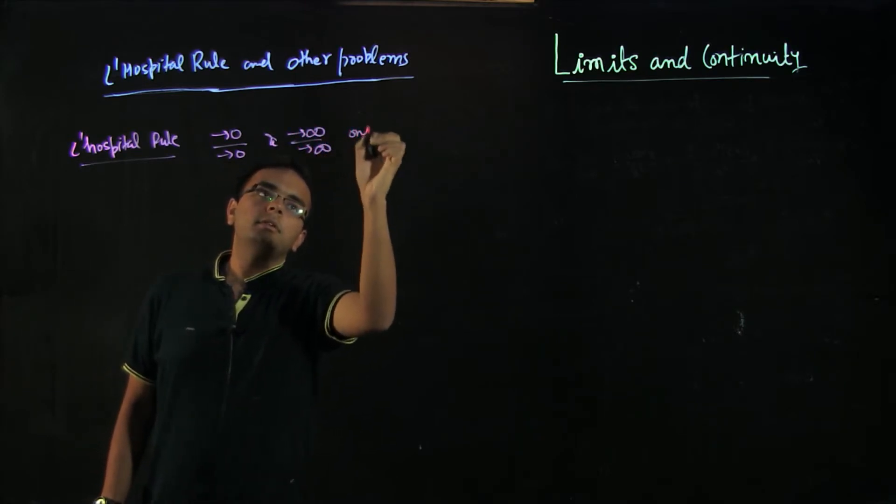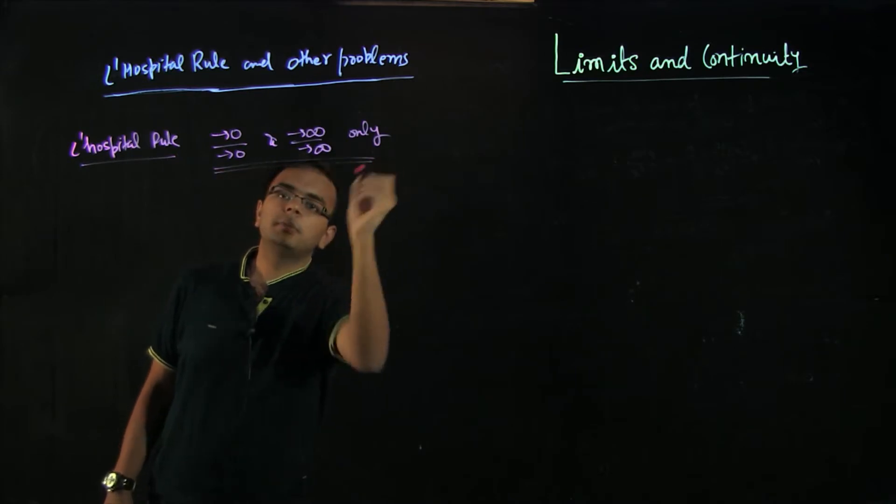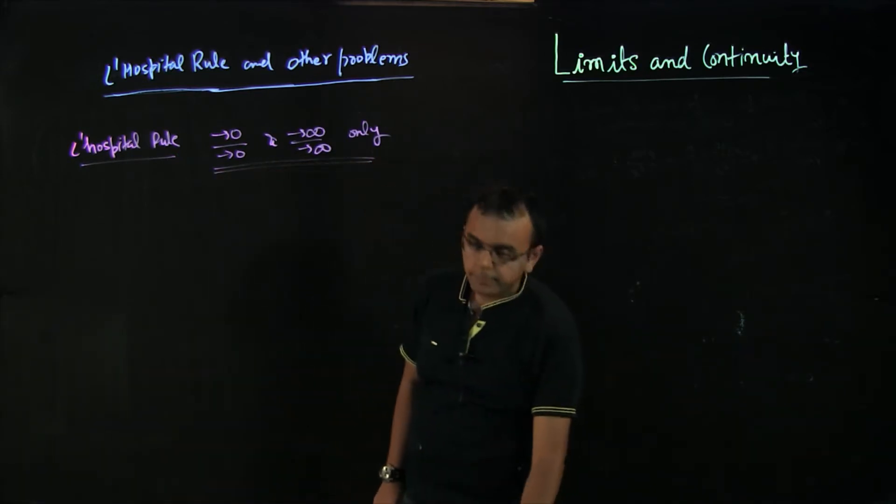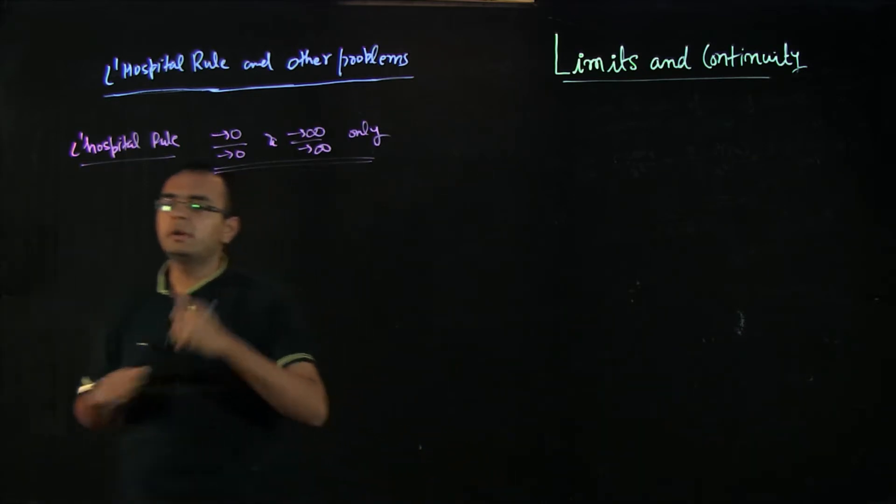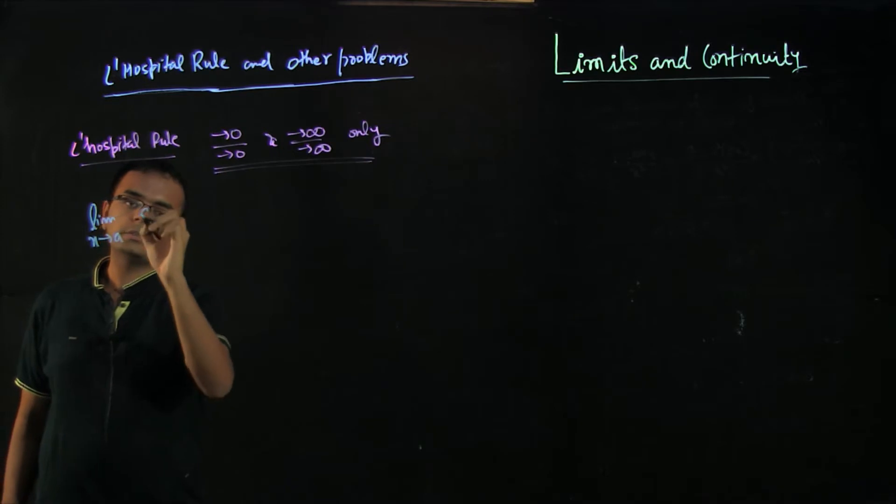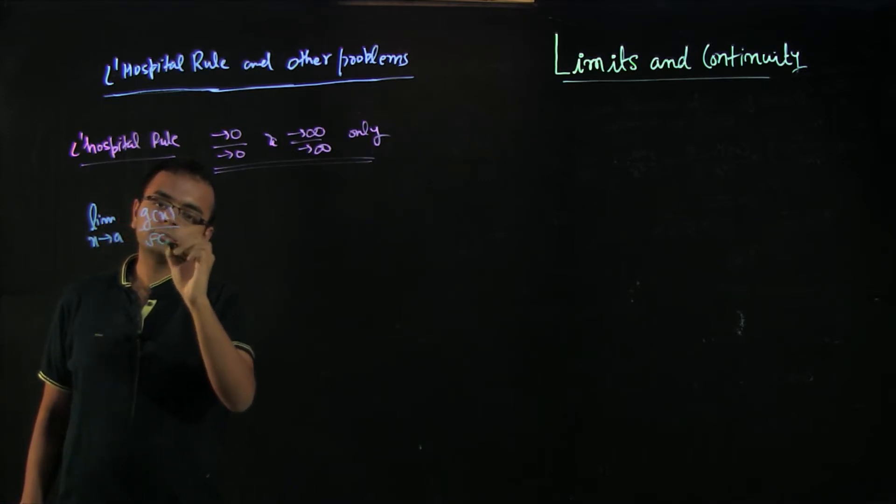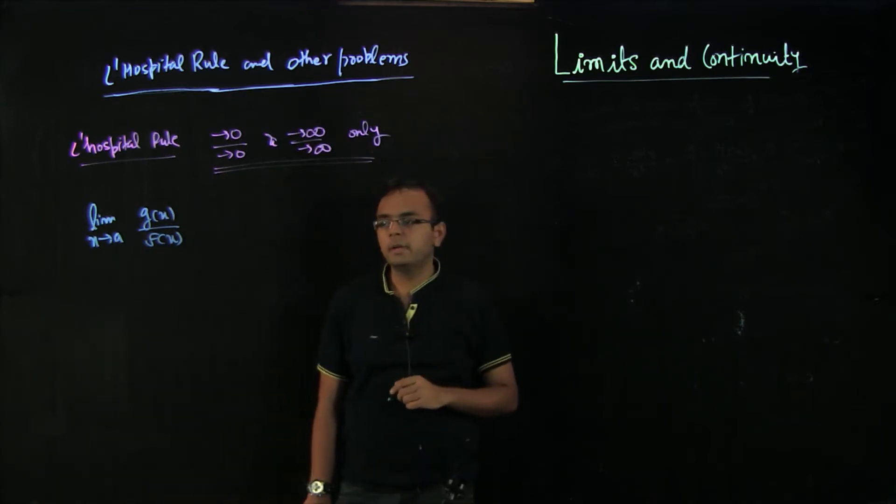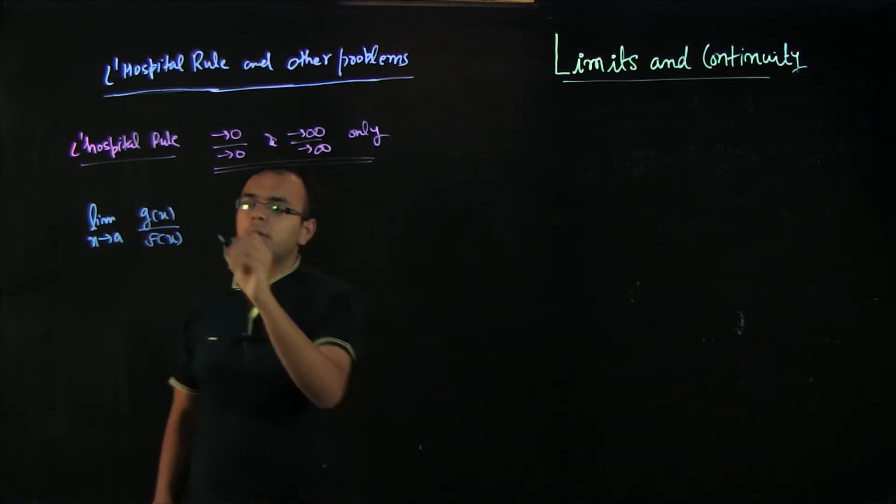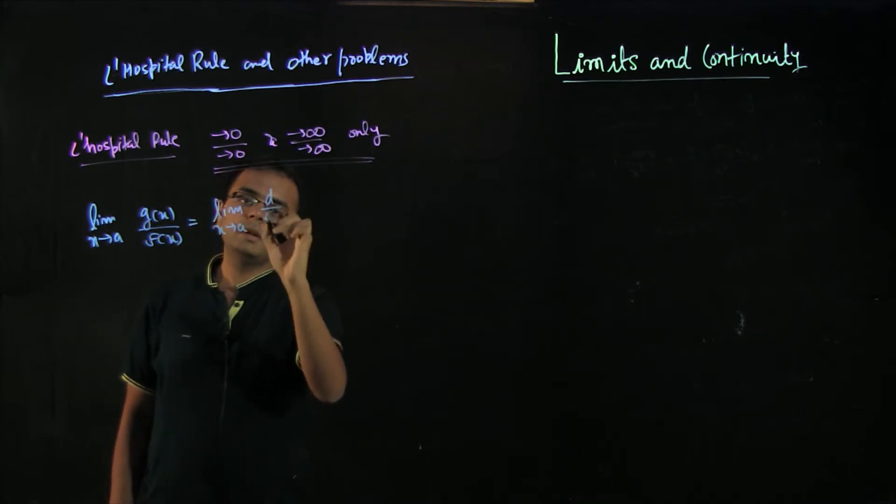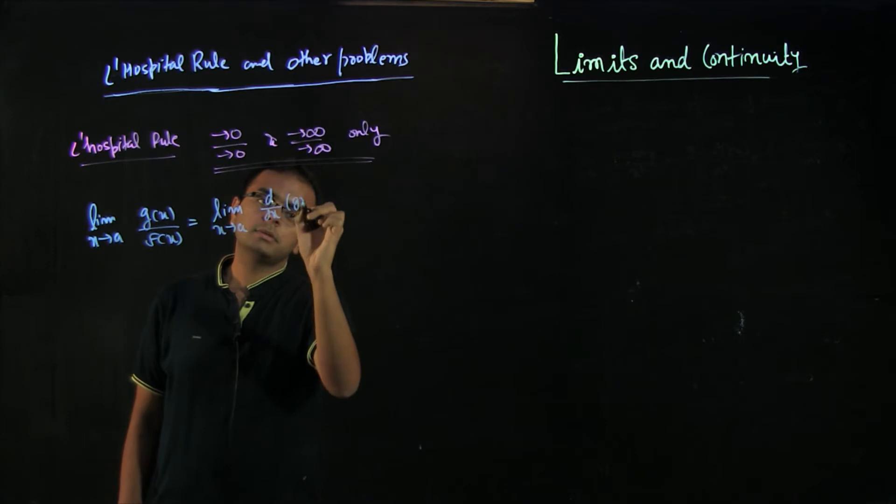Please note that this is important, that this can only be applied for these type of problems. What L'Hopital rule says is that whenever you see limit x tends to a, g(x) by f(x), and that is going to 0 by 0 or infinity by infinity, then this is also equal to limit x tends to a, d by dx of g(x) and d by dx of f(x).